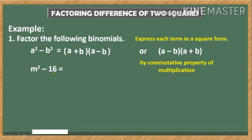So we express each term in a square form first for easier factoring. We have now the square of m and the square of 4. Why 4? Because when you multiply 4 by itself, the product is 16.